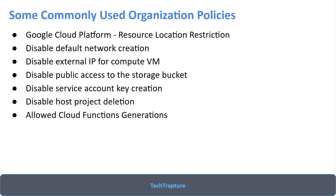Another policy is Cloud Run function generation enforcement. If you want developers to stop using first-generation Cloud Run functions and only use second-generation, you can enforce that through an organization policy. We are going to see this policy as well in the hands-on demo. Now let's jump into the Google Cloud Console and start working on organization policy.